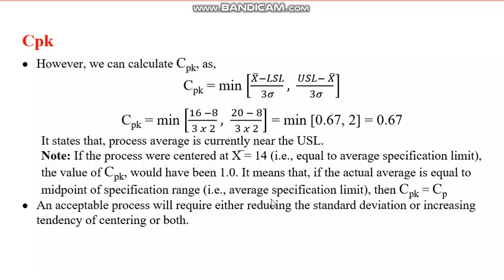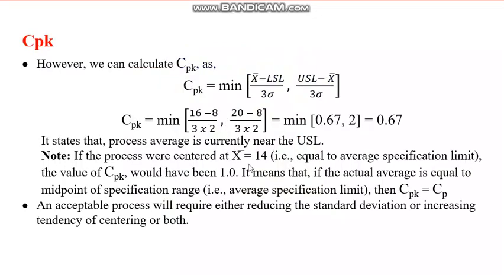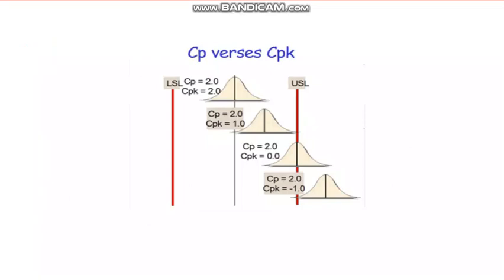If the actual average equals the midpoint specification, then CPK equals CP. But if the distribution is falling to the left or right side, CPK will be less than CP. CPK gives you the actual capability of the process, and a higher CPK aligned with CP is the more desirable condition.